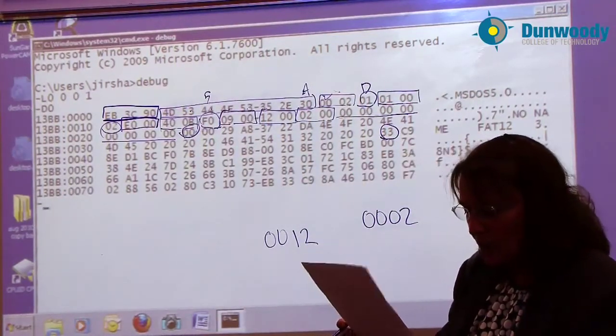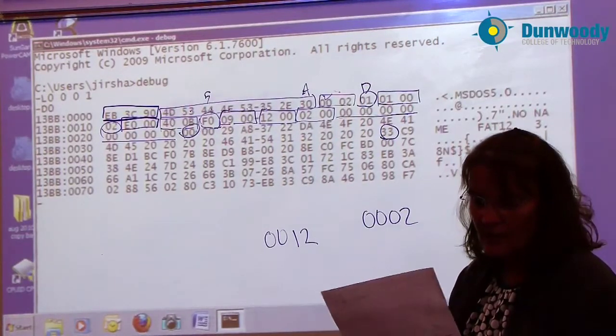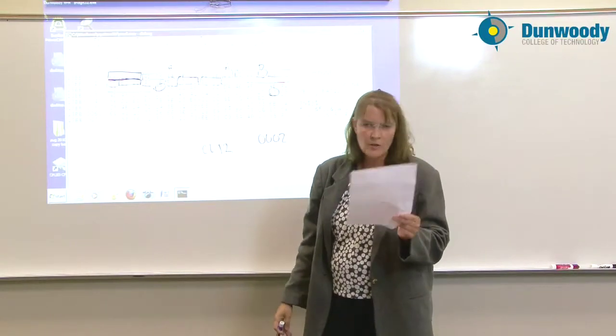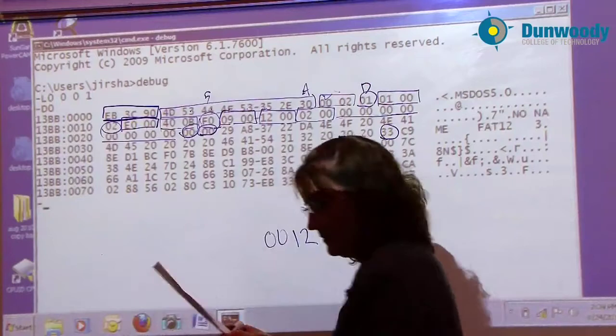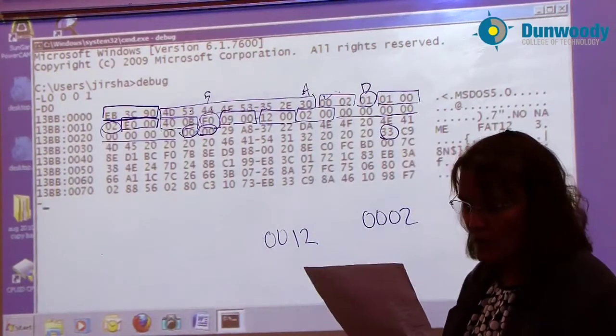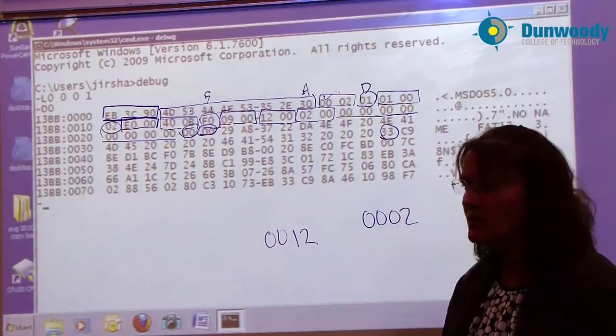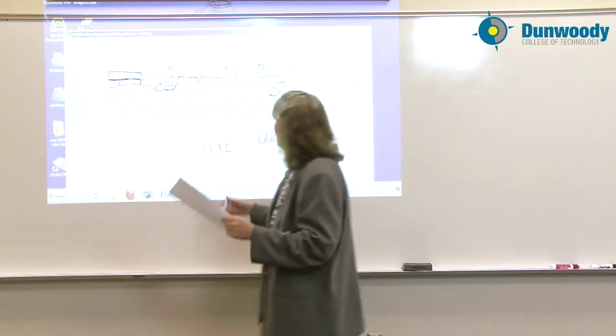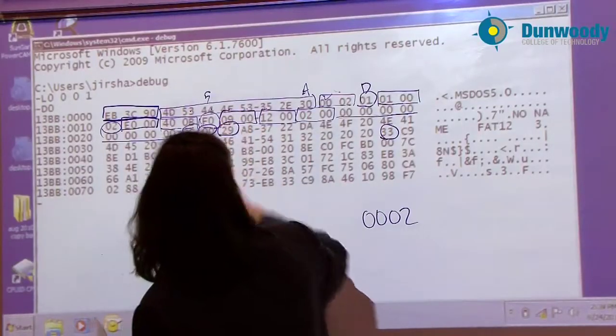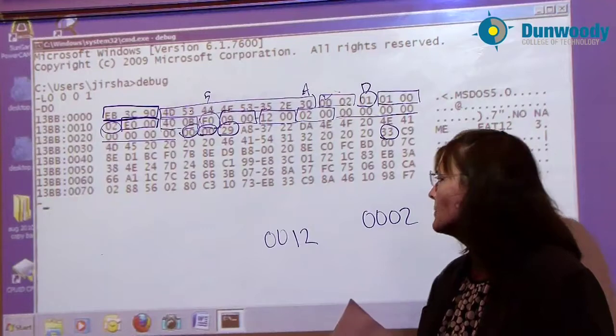The next byte over is not used by FAT at all. It's listed as reserved. The field name is current head, but it's not used, so it's a zero. And then the next one byte over is the extended boot signature record. It's like a serial number that's created by the format system. It's got to be a 28 or 29 if it's going to be recognized by Windows NT. It happens to be a 29.